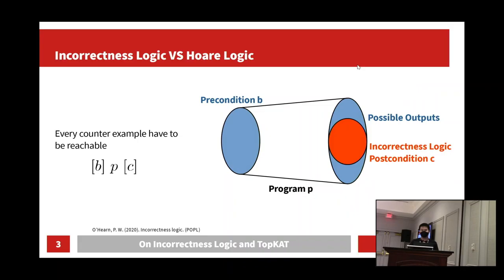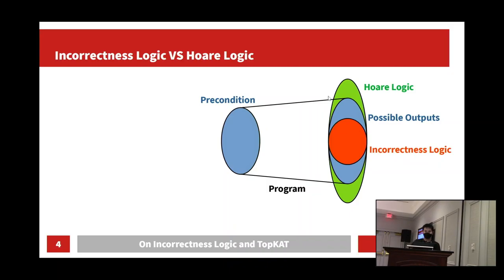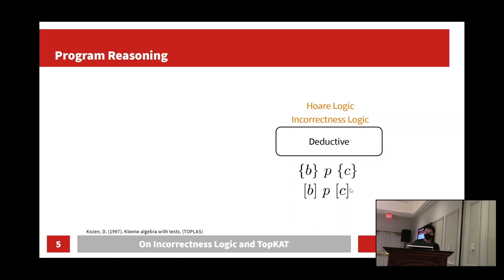On the contrary, incorrectness logic is a logic that seeks to verify counterexamples. An incorrectness logic triple BPC is true when all of the undesirable states in the postcondition C are reachable. Hence the postcondition C needs to be contained within all the possible outputs. There's a strong symmetry between Hoare logic and incorrectness logic: in Hoare logic the postcondition contains all the possible outputs, whereas in incorrectness logic the postcondition is contained by the possible outputs.